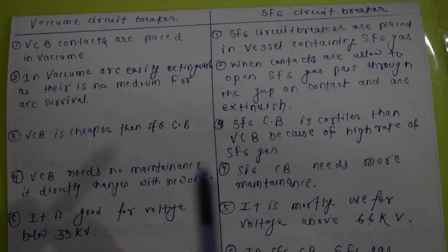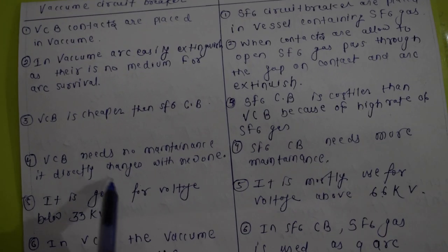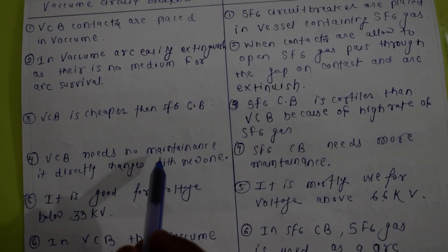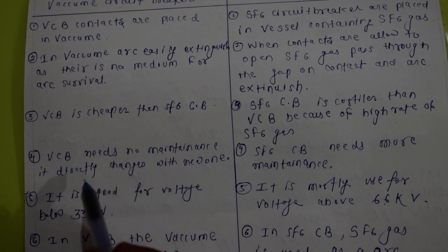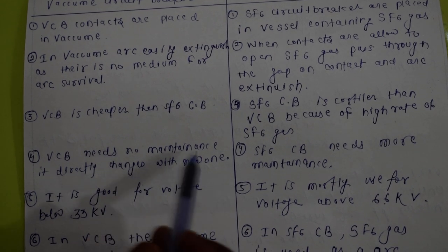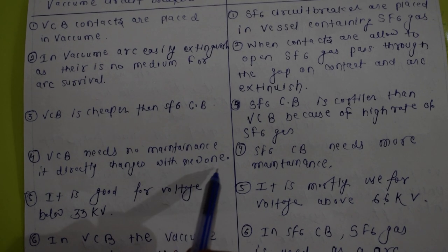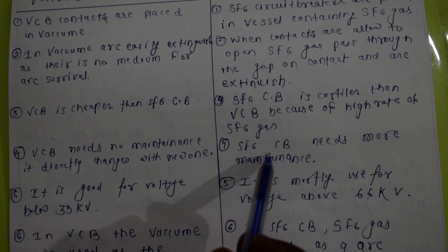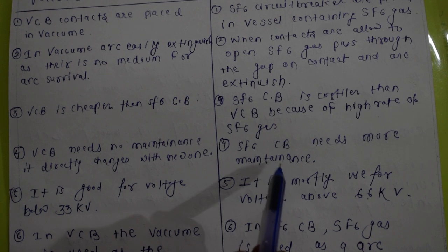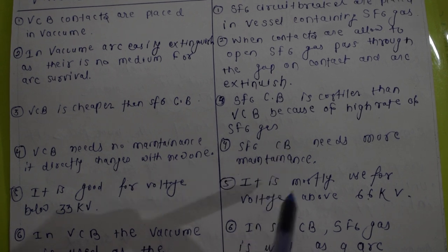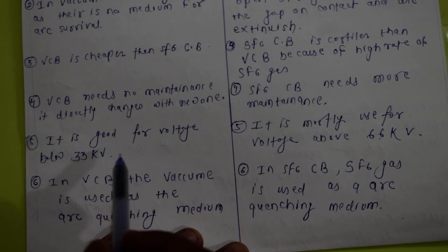The vacuum circuit breaker needs no maintenance because it uses vacuum, so instead of maintaining it we can directly replace it with a new one. The SF6 circuit breaker needs more maintenance because SF6 gas is present and must be managed.